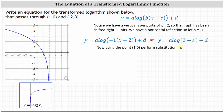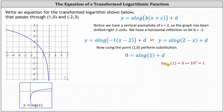From here, we'll use the point (1, 0) and perform substitution — substituting one for x and zero for y. This gives us zero equals a times common log one plus d. But common log one equals zero because 10 to the power of zero equals one. Since log base 10 of one equals zero, this indicates that d equals zero.